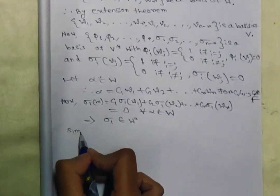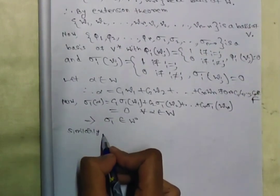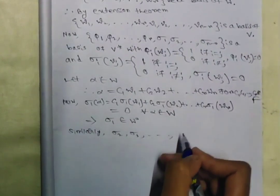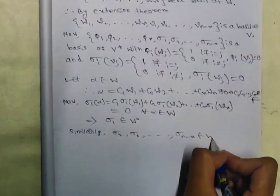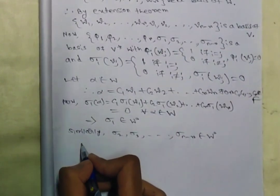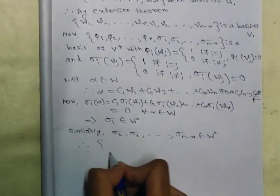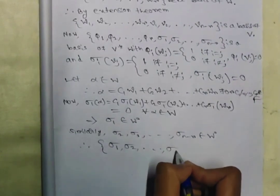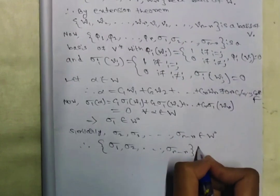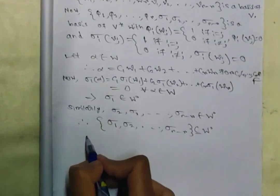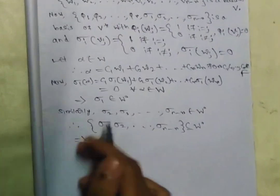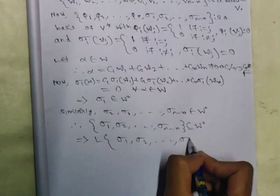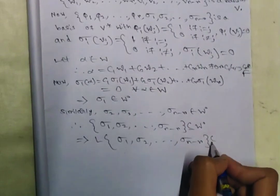Similarly, we can show that sigma_2, sigma_3, ..., sigma_(n-r) all belong to W naught. Therefore sigma_1, sigma_2, ..., sigma_(n-r) are contained in W naught, which implies the linear span of {sigma_1, sigma_2, ..., sigma_(n-r)} is contained in W naught.